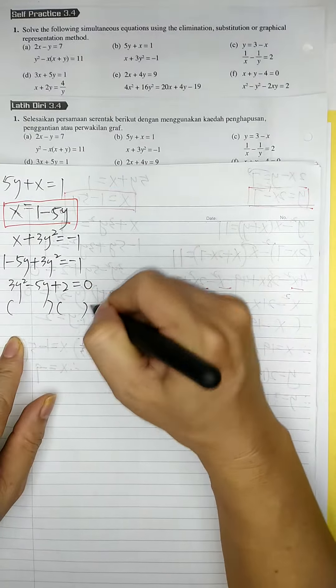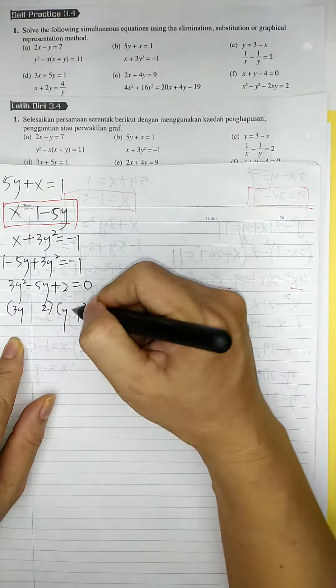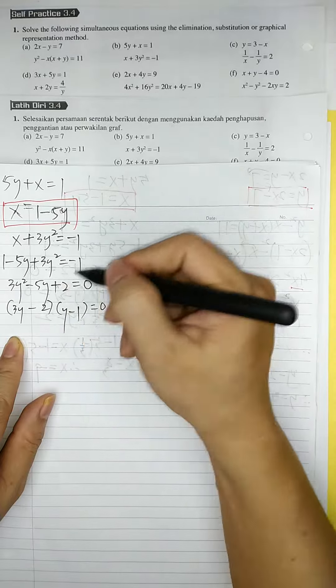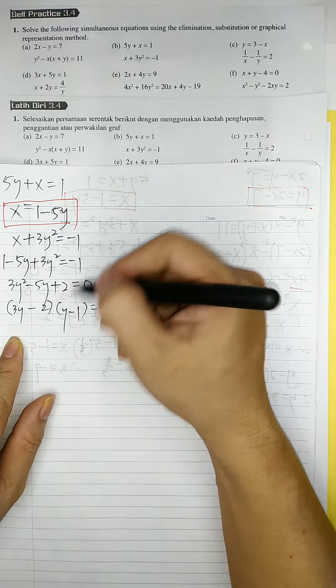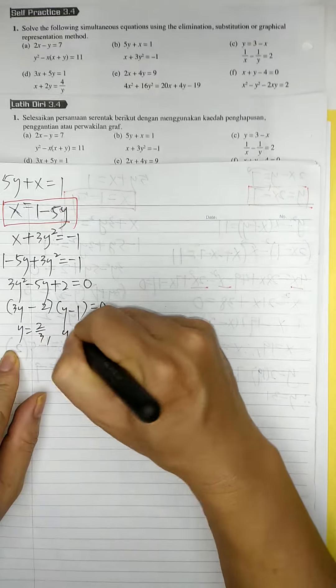We'll try to factor: 3y times y, 2 times 1, negative negative. So y equal to 2 over 3, and y equal to 1.